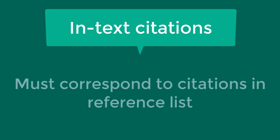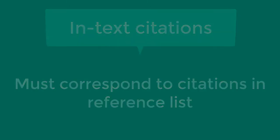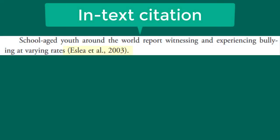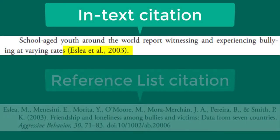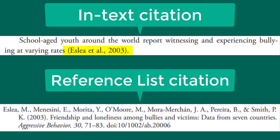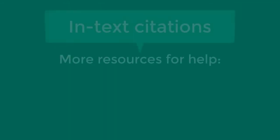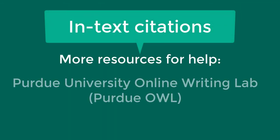Please note that your in-text citations must correspond to a citation in your reference list at the end of the paper. The in-text citations provide a small amount of information about the resource, but the reference list is where the full citations are listed and those contain more details. The author listed in your in-text citation must be the first item that appears in your full citation in the reference list.